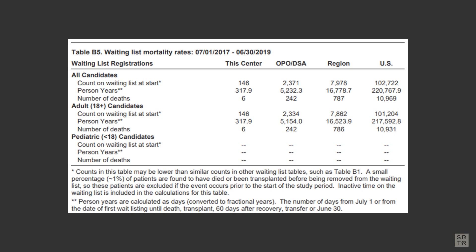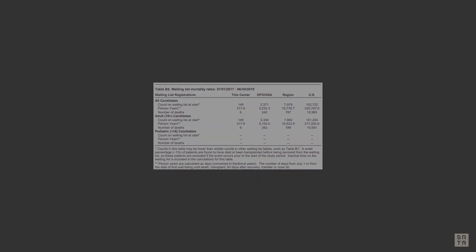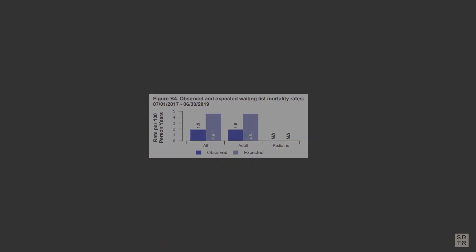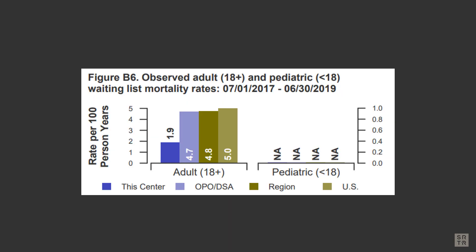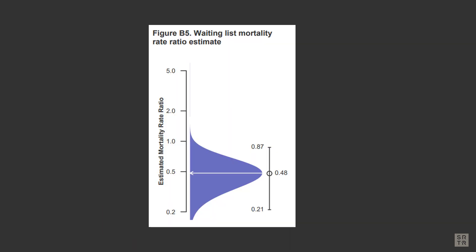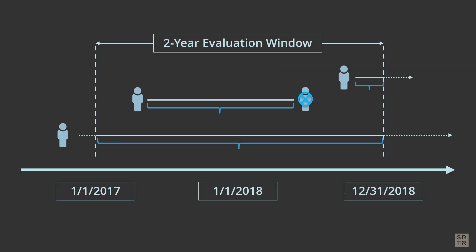Waitlist mortality is an important metric for transplant programs to measure. This data tells us how likely a candidate is to die while waiting for a transplant at a program. Transplant programs often ask SRTR questions about the methodology behind it. This video is intended to be a comprehensive walkthrough of how the ratios are attained, as well as an explanation of person time and some specific scenarios of how candidates moving on and off the list will affect your mortality rate.